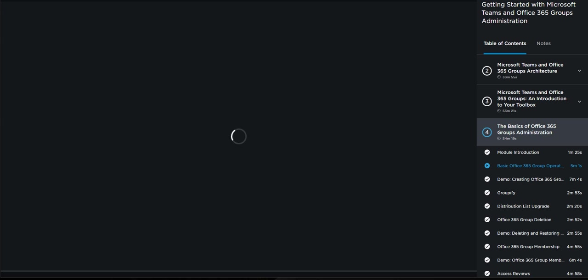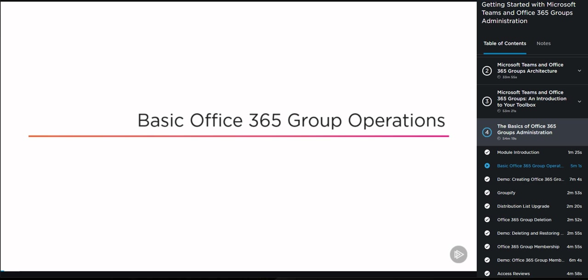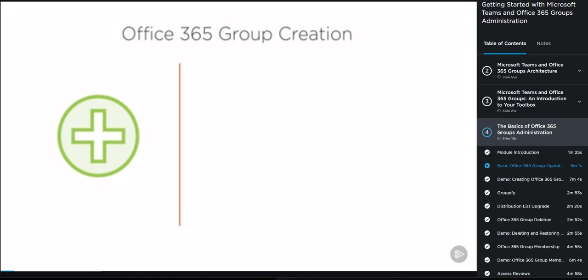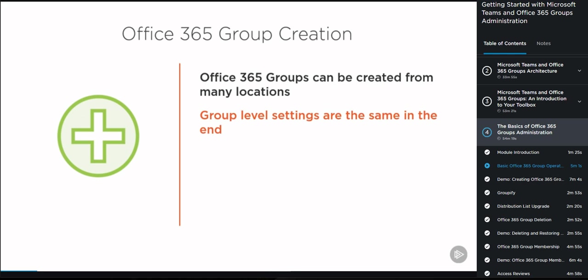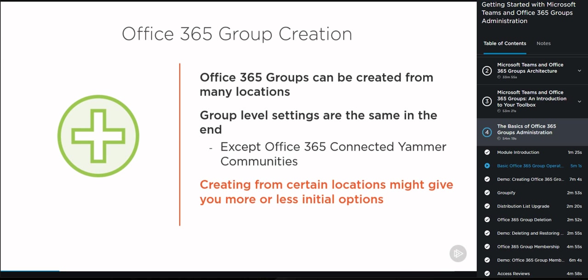Let's start with the basic Office 365 Group operations — first of all, creation. Office 365 Groups can be created from many locations as we have seen in the architecture model of this course. Wherever you create them from, they all have the same settings, with the exception of Office 365 Connected Yammer Communities. The only difference is that creating from certain locations might give you more or less initial options, but you can always access the same settings if you go to the group properties afterwards.